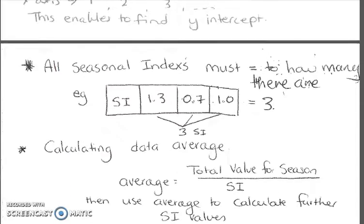Going back to seasonal indexes, all your seasonal indexes add up to how many there are. As we can see in this example, we've got three seasonal indexes. These need to add up to three. If we add up those three values, they do add up to three. Your total seasonal indexes add up to how many seasonal indexes you have. Months of the year, we've got 12. If you add up all your seasonal indexes, they equal 12.